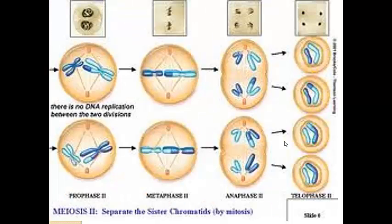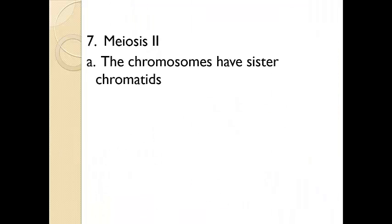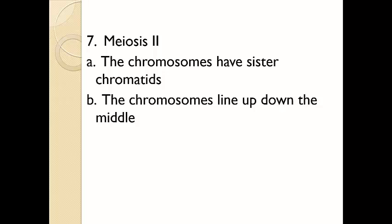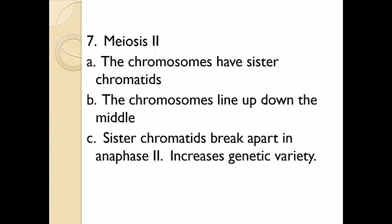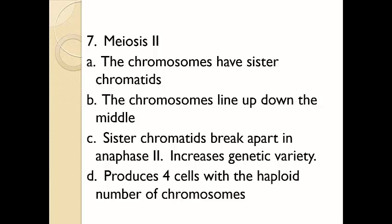And then in meiosis II, not a lot that I want to go through with this one, mainly because it is very similar to mitosis. Now you have the two chromosomes, in this case, lining up down the middle. You have the centromere getting broken and the sister chromatids getting pulled away from each other. So this second half of meiosis is very similar to what mitosis looks like. Some key features, the chromosomes at the beginning of meiosis II still have the sister chromatids. The chromosomes are going to line up down the middle. The sister chromatids are going to split apart in anaphase II. And again, depending on which piece of the chromosome gets pulled to which cell, that increases genetic variety. And at the end of meiosis II, you are going to have four cells. And each one of them has half the number of original chromosomes that you started with. So for humans, that would be 23.